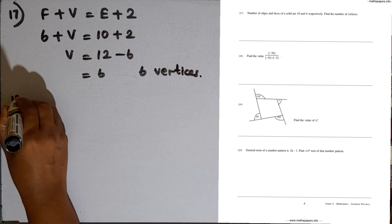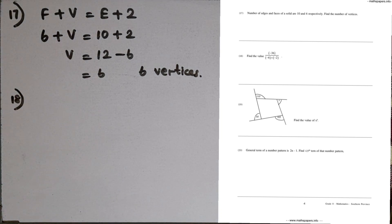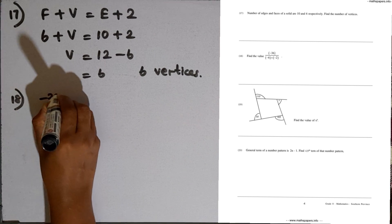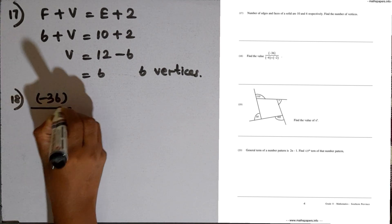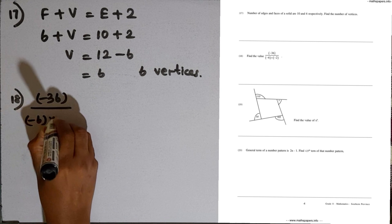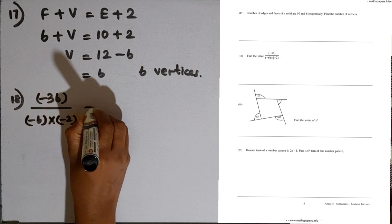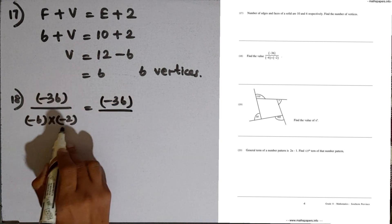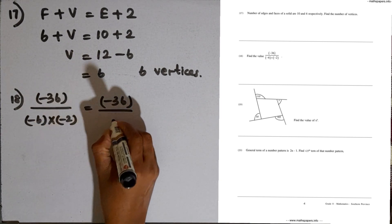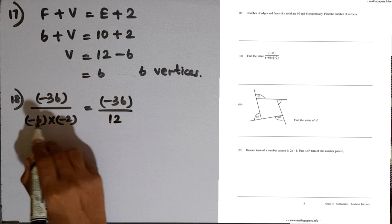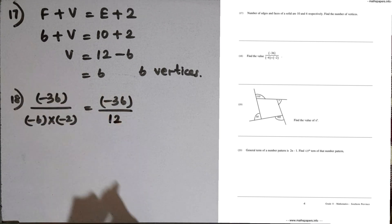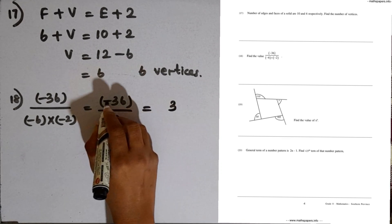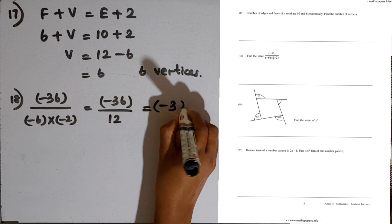Question number 18: we are given minus 36 divided by minus 6, multiplied by minus 2, which equals plus 12. Two negative numbers multiplied become positive. Then 36 divided by 12 is 3. As this result is negative, the answer is minus 3.